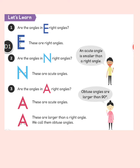Let's start with E. All the interior angles in an E are right angles, just as in the picture. And N — there are two interior angles in N, and as Ravi is showing us, they are both acute angles, because they're smaller than right angles.